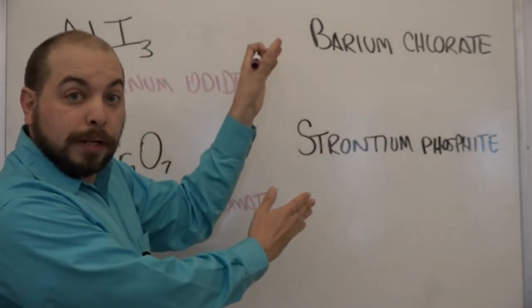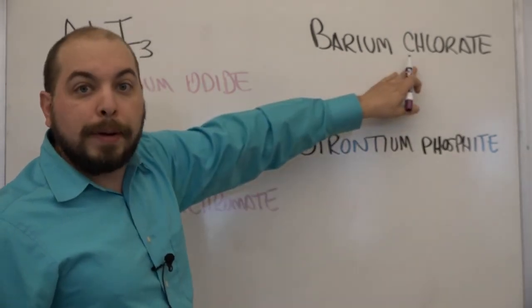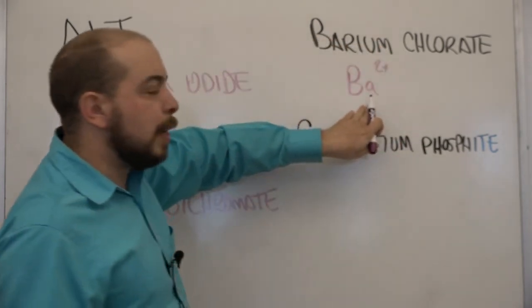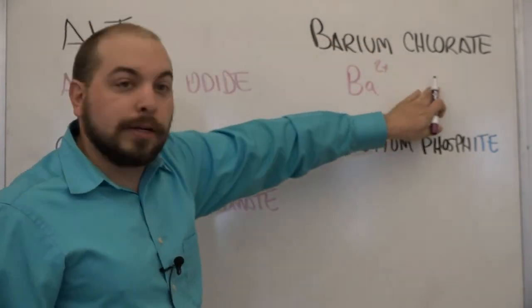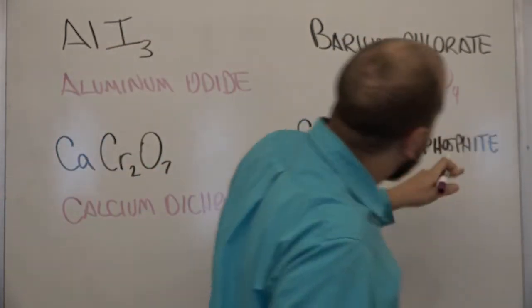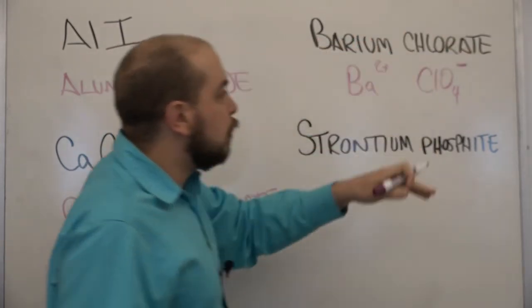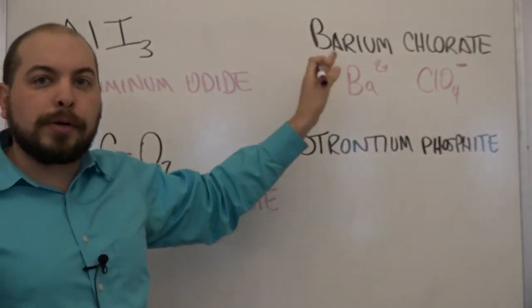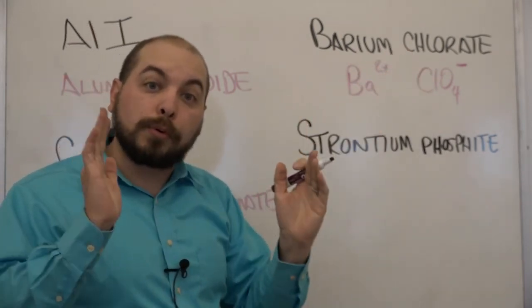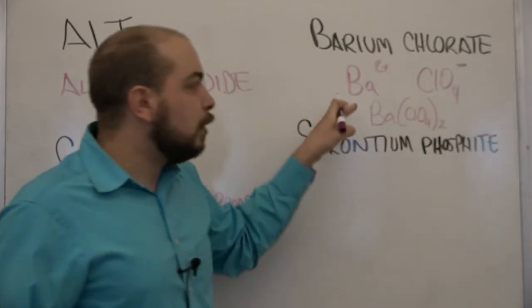In terms of name to formula, barium chlorate, so with barium we are going to start with barium two plus. And chlorate, C-L-O-4 has a charge of minus one. Therefore this becomes barium chlorate, B-A-C-L-O-4-2 and remember with the parentheses, barium chlorate.